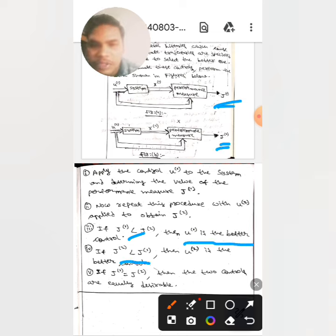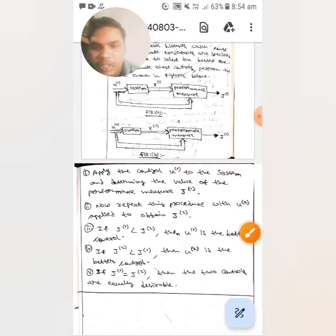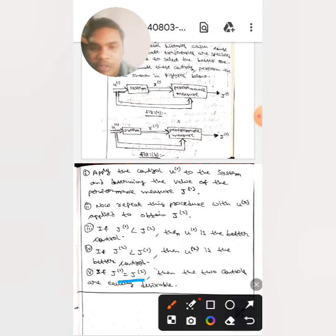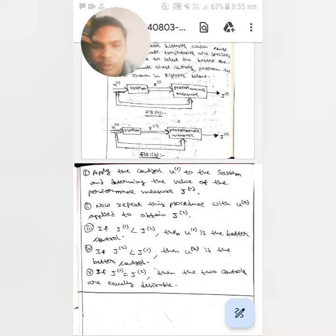Whereas if j of 2 is less than j of 1, then u of 2 is the better control. Whereas if j of 1 equals j of 2, then the two controls are equally desirable. In this way we will select a performance measure.